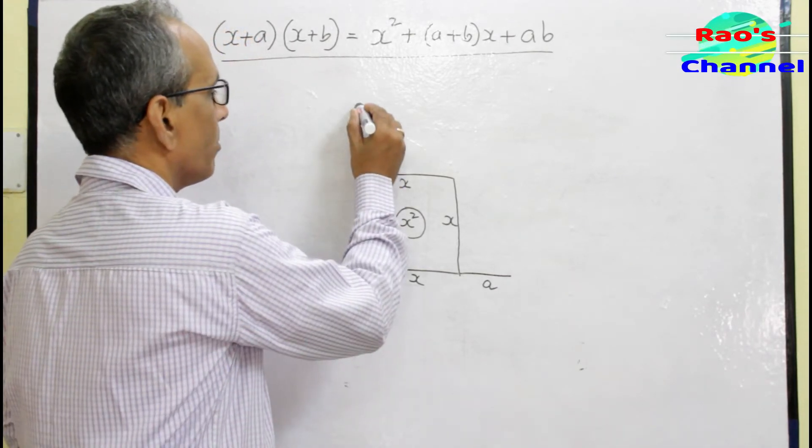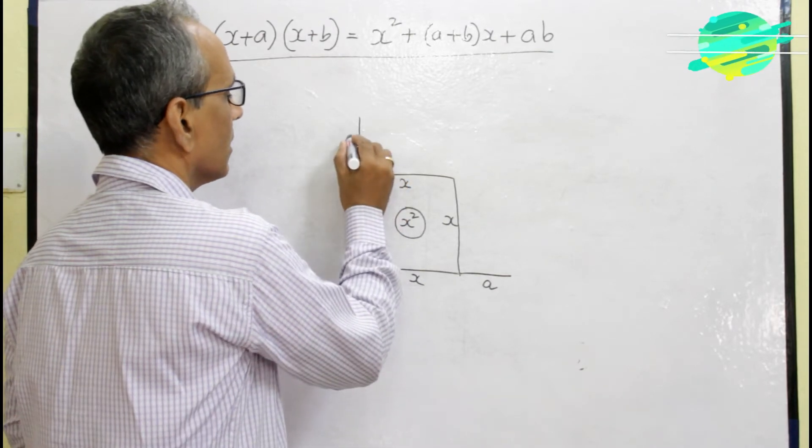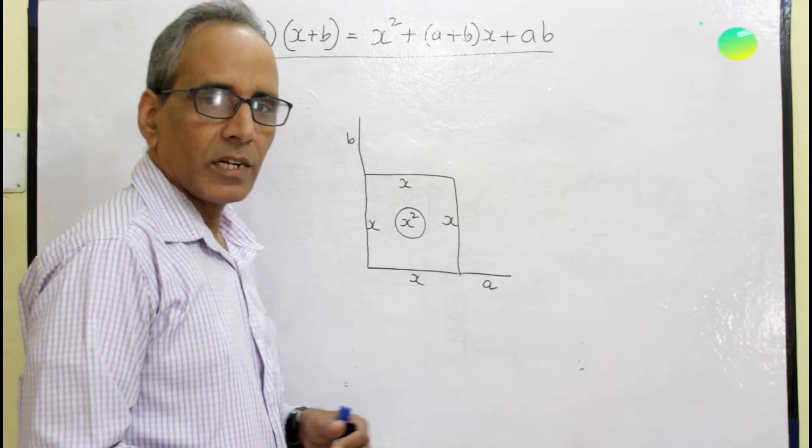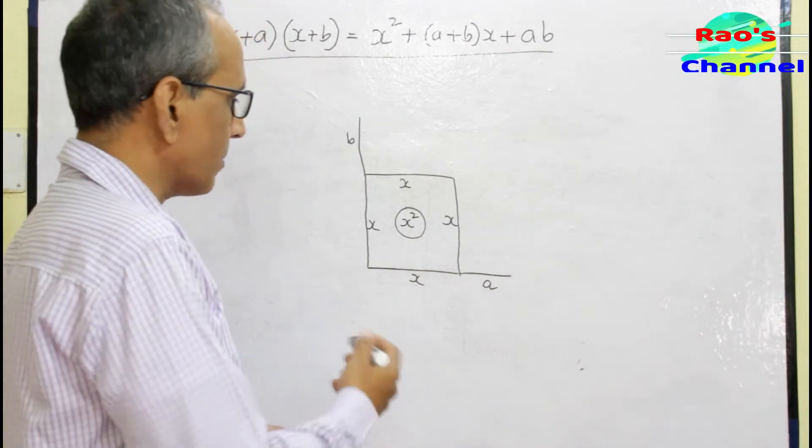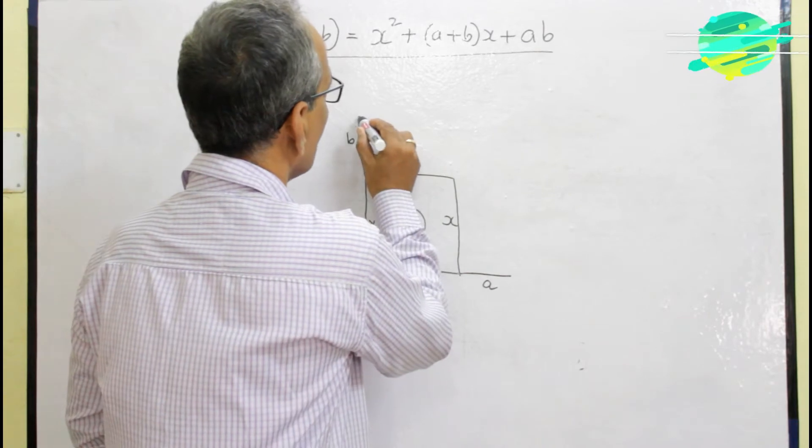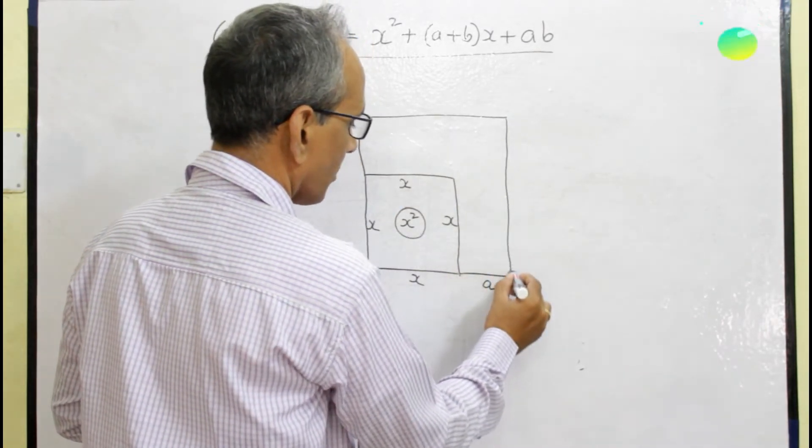Let me complete the figure. That means let me complete the square again by increasing dimensions. This is the new square obtained by increasing the adjacent sides to a units and b units.